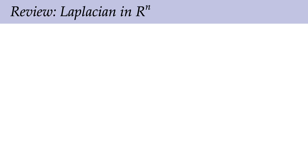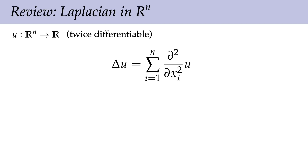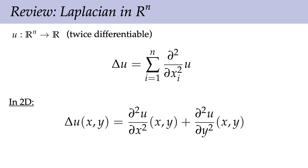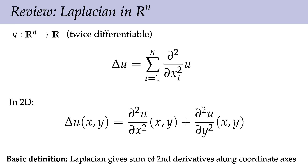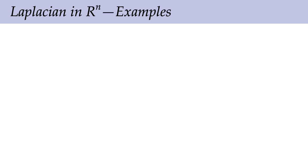What is the basic definition of the Laplacian? If we have a scalar function u on Rn that's twice differentiable, the Laplacian is the sum of all the second partial derivatives of u along the coordinate directions x_i. For instance, in 2D, if we have a function u of x and y, then the Laplacian of u is the second derivative along x plus the second derivative along y, evaluated at the same point. The Laplacian gives the sum of second derivatives along coordinate axes.